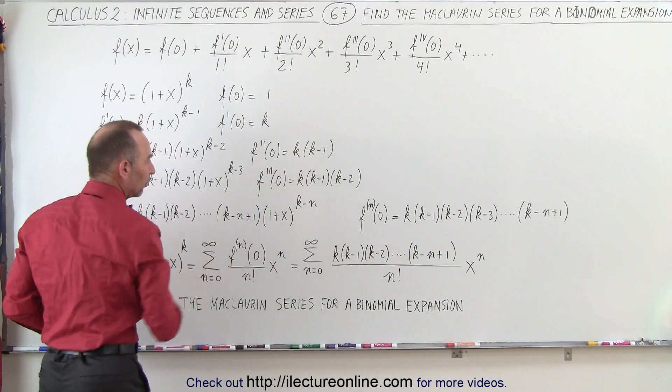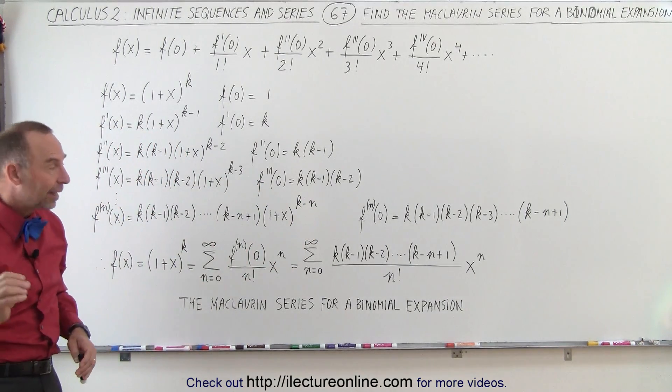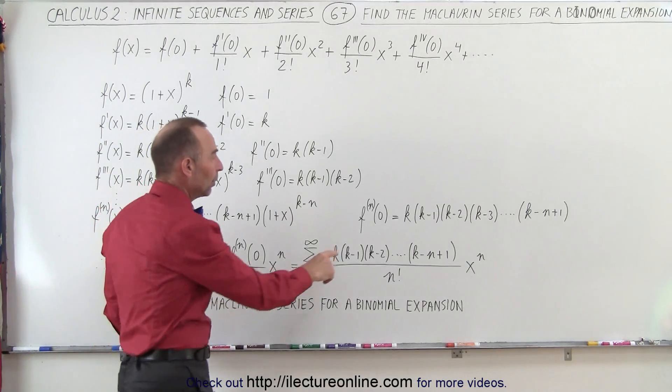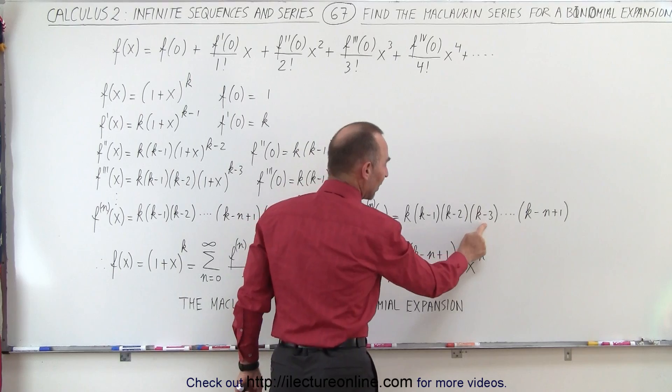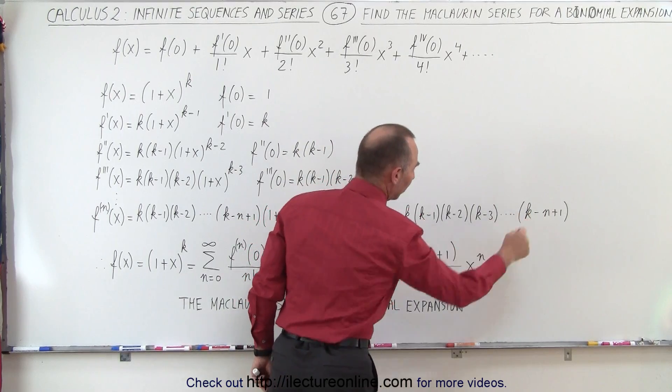So n now will be the number here, that's the nth root instead of the third root. And if we evaluate that function at 0, we can then see that we get k times k minus 1 times k minus 2 times k minus 3, all the way up to k minus n plus 1.